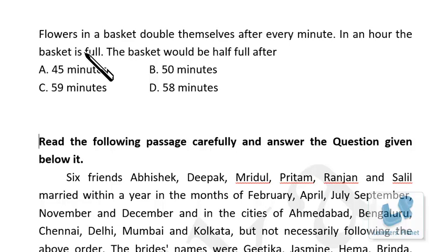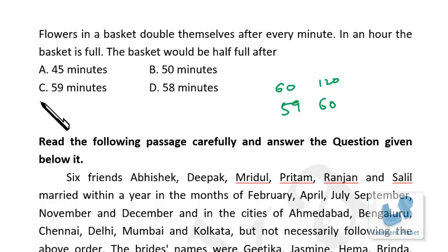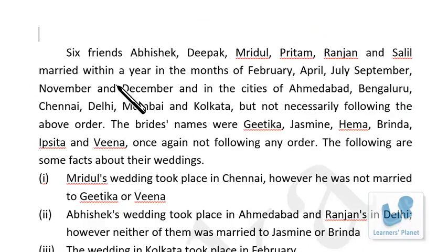Flowers in a basket double themselves after every minute. In an hour the basket is full — then the basket would be half full after how many minutes? The flowers double every minute, so at 59 minutes suppose there are 60 flowers; on the 60th minute they will be 120 flowers and the basket will be full. Since in an hour the basket is full, the basket is half full at 59 minutes.